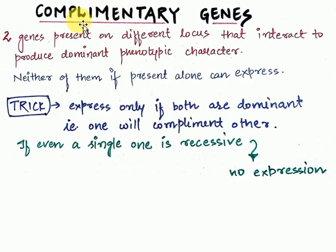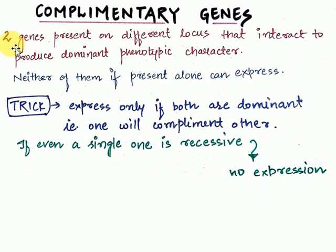So both the genes, if dominant, will only express. If even a single gene is recessive, they will not express at all. Both genes complementing each other — dono ka dominant hona bahut zaroori hai. If even a single gene from both is recessive, there will be no expression at all. Two genes present on different loci interact to produce the dominant phenotypic character.